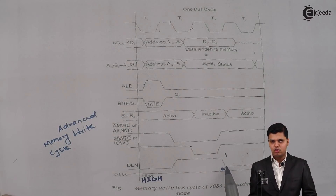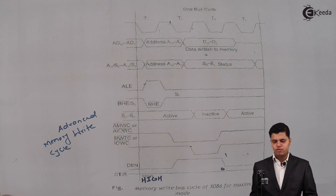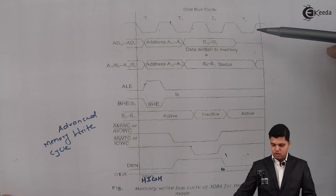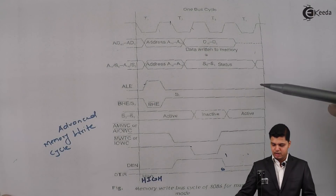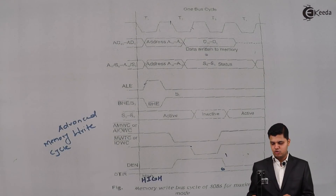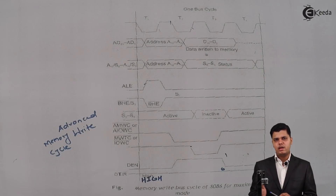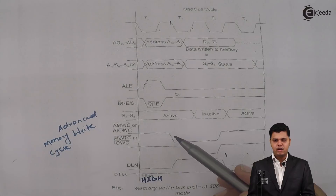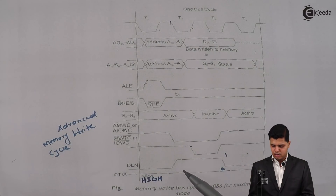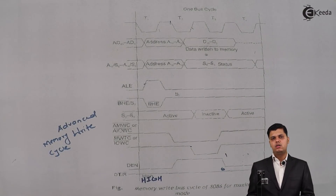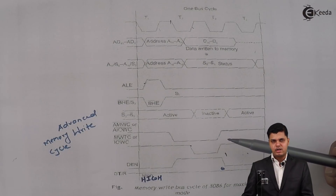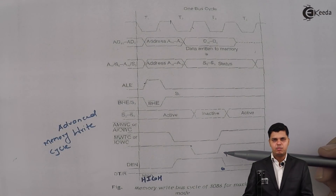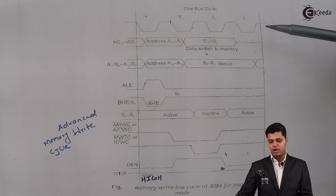DEN bar goes from 1 to 0, disabling the transceiver so no more data is forwarded to memory. In T4 state, all signals activated for the write cycle in maximum mode are deactivated. To summarize: in T1 the address gets latched onto the 8282; in T2 data is available on the data bus and AMWC, MWTC, and DEN bar are enabled; in T3 the data from the microprocessor is written to memory and signals are deactivated; in T4 all remaining signals such as AMWC, MWTC, and others are deactivated.